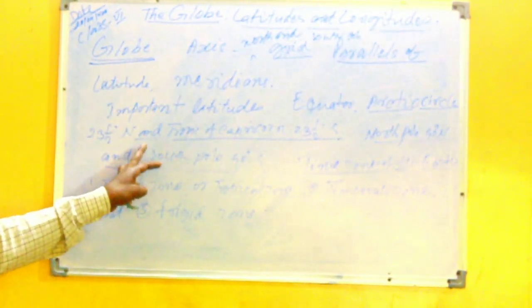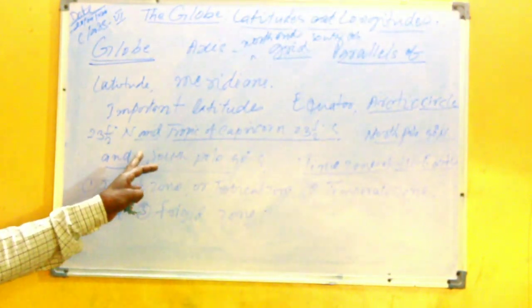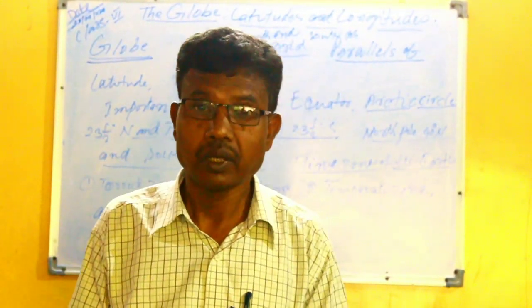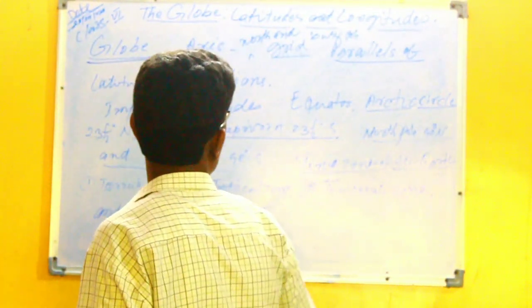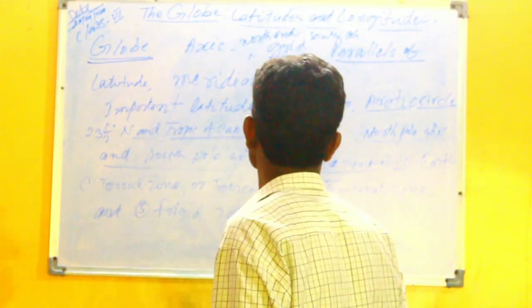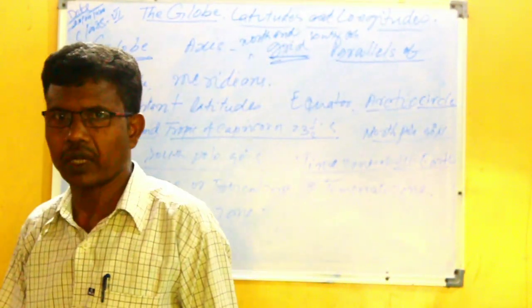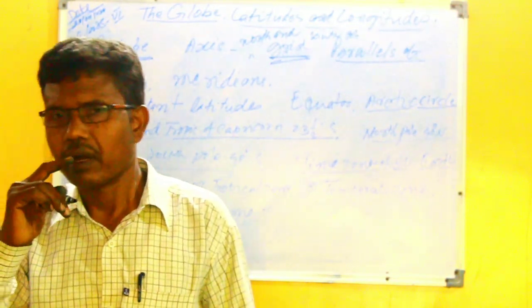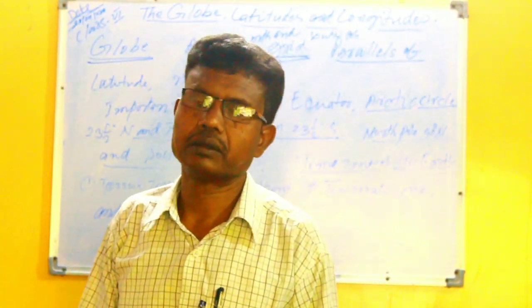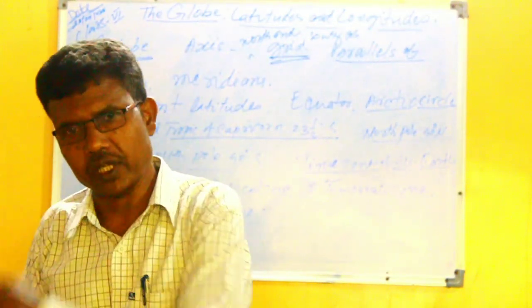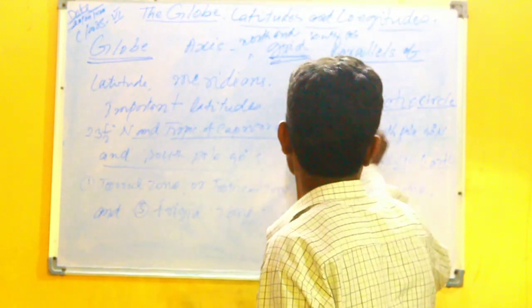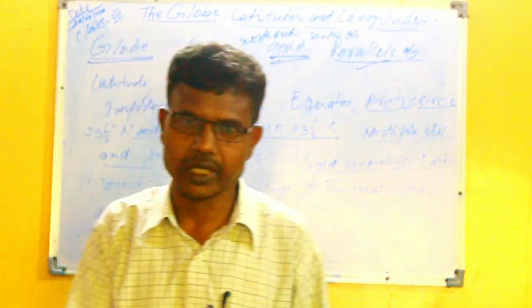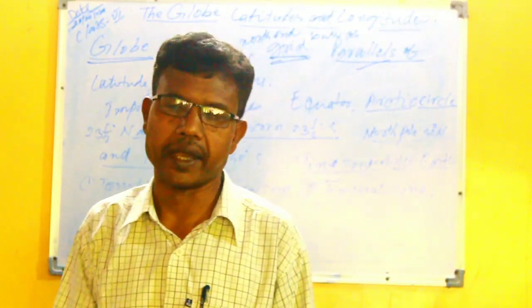To make the study of Earth easier, there are some imaginary lines on the surface of the globe, which form a pattern called a grid. On the globe, we see some horizontal circular lines between the two poles. They are called the parallels of latitudes. They run parallel to the equator and run from west to east direction.